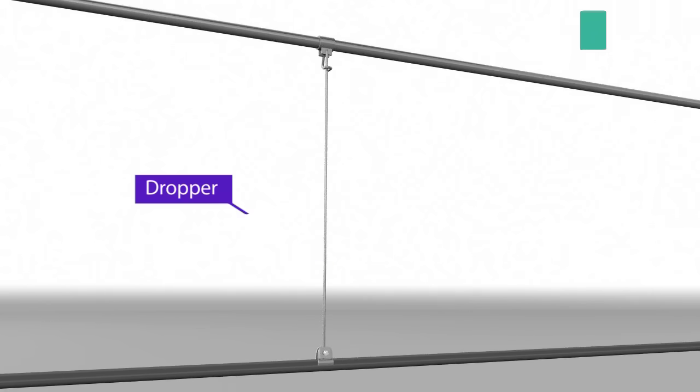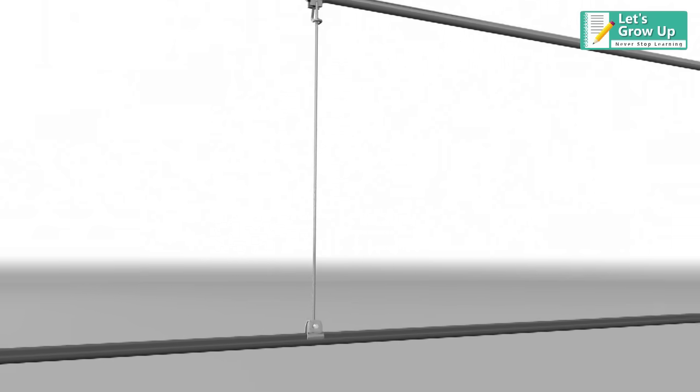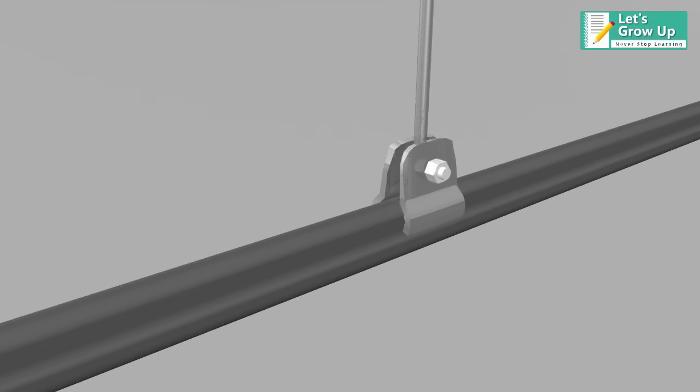The design of the contact wire is grooved to allow a clip to be fixed on the top side. The clip is used to attach the dropper wire.